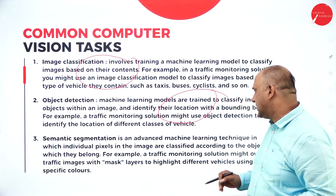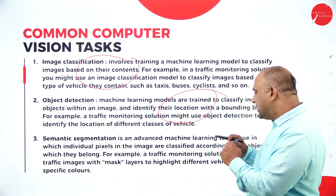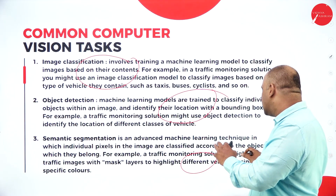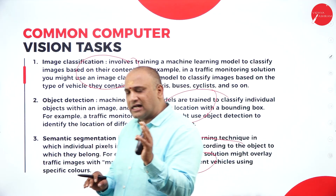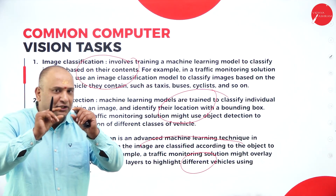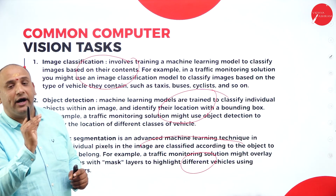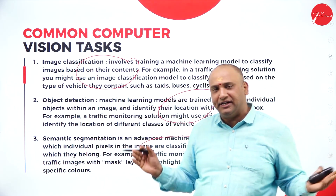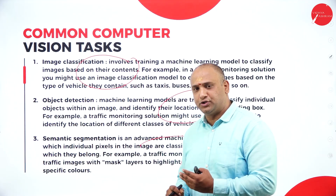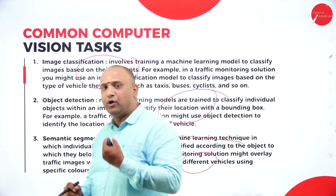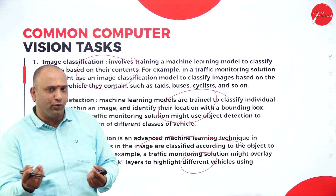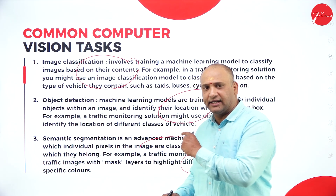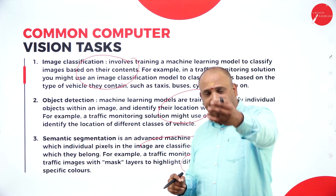Next is semantic segmentation, where mask layers highlight different vehicles using specific colors — images are classified according to the objects they belong to, grouped into closely related categories. For example, I could find out the number of SUVs passing through a particular signal in Mysore, Bangalore, or anywhere in India. Similarly, I can identify the movement of two-wheelers on a particular road or highway using semantic classification. AI is proving it has great prowess in advancing human ideology.